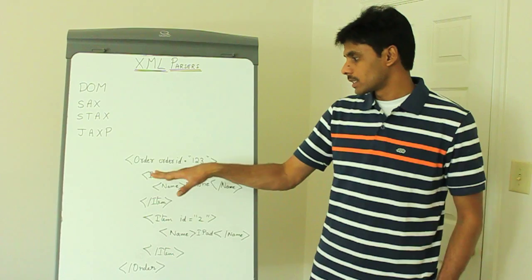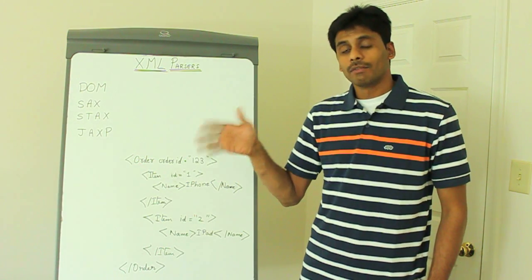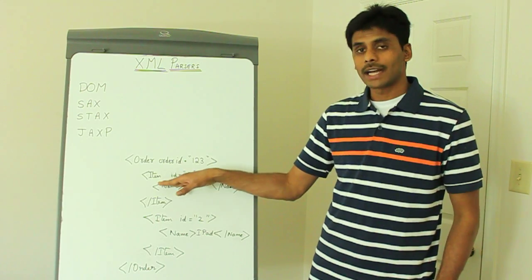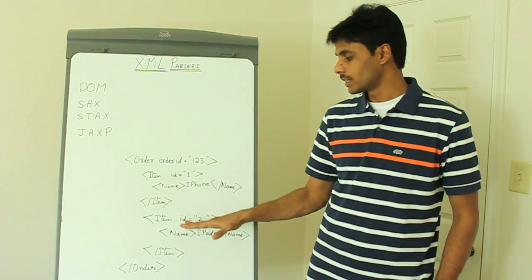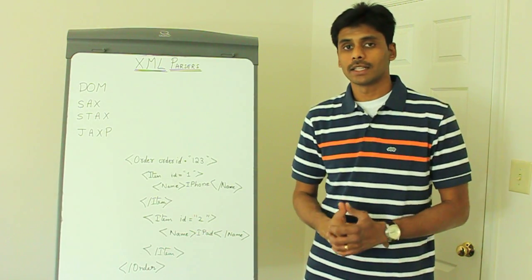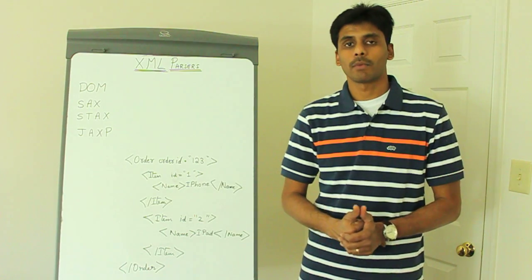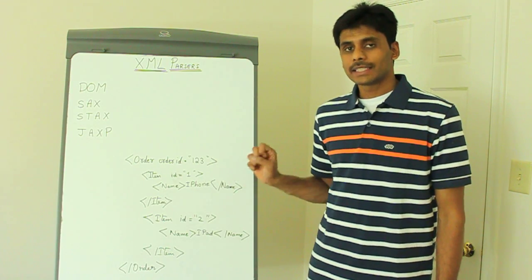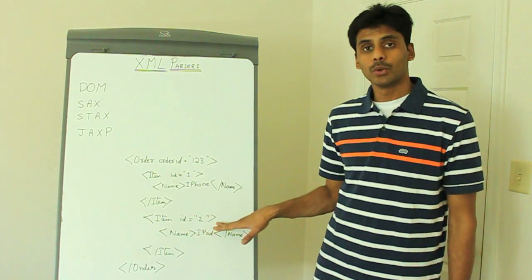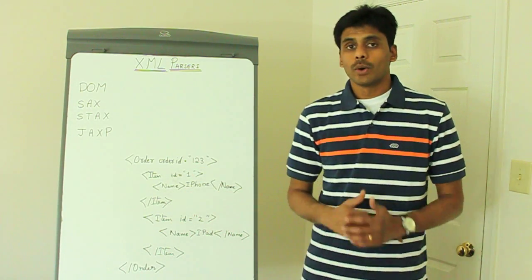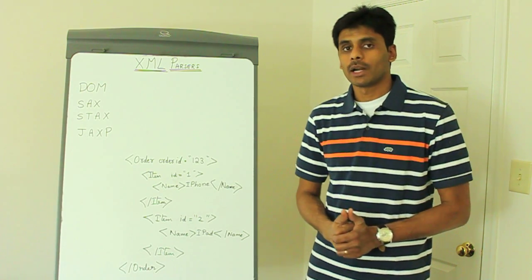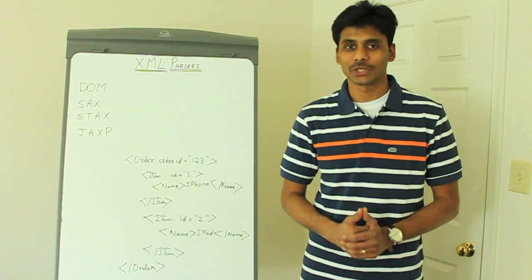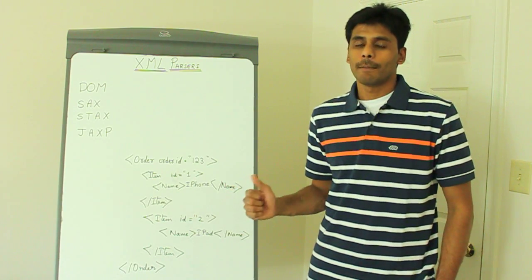So as soon as the SAX parser hits the order element, it invokes a method on our handler giving us the element name and the appropriate details. Similarly, when it hits item 1, it tells us it has reached item 1. When it reaches item 2, it tells our handler that it has reached item 2 and these are the contents. We can then process them — in our case, we parse the data and save it to the database. Unlike the DOM parser, the SAX parser reads the document and then forgets about it; as soon as it reaches item 2, it forgets about item 1. It doesn't load the entire XML document into memory. It's always advantageous to use SAX when you have memory constraints, and most applications do, so SAX is a preferred parser.